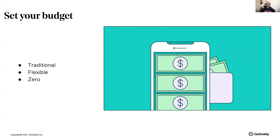There are different types of budgets to consider: traditional, flexible, and zero. A traditional budget is where you start with a sum of money and then allocate amounts to each category. Once a category is depleted, you can't move other funds into it. With a flexible budget, your category depletion can be fulfilled by another category — if you ran out of money in one area, you can move it to another spot.